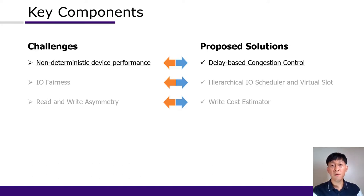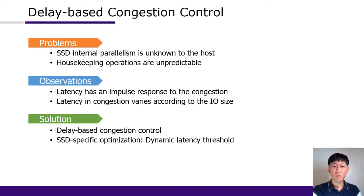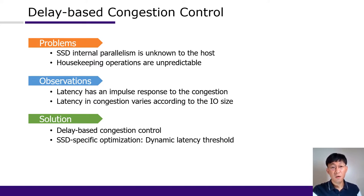First, Jimbo estimates device performance capability using its delay-based congestion control mechanism. SSD internal parallelism is hidden from the user, and housekeeping operations such as garbage collection are unpredictable. Measuring available bandwidth is important because these problems become more severe due to IO interference and the SSD internal queuing mechanism if we overcommit IOs. However, there are no IO drops in storage devices unless there is a critical error, so we cannot use packet drop-based congestion control. Through dense experiments on IO latency, we found that latency has an impulse response to congestion and varies according to IO sizes.